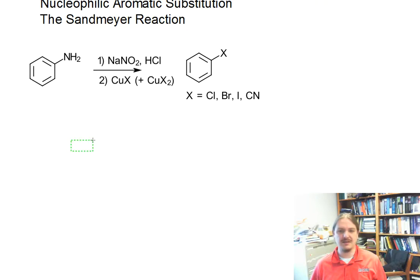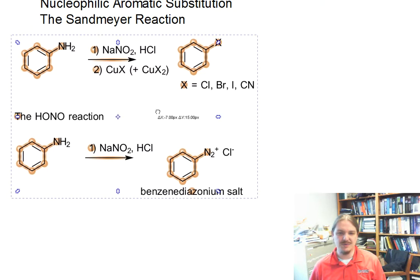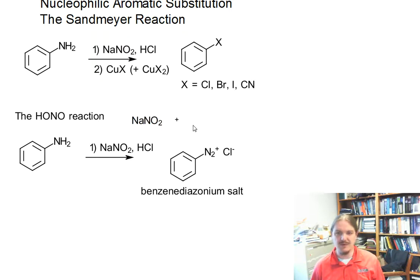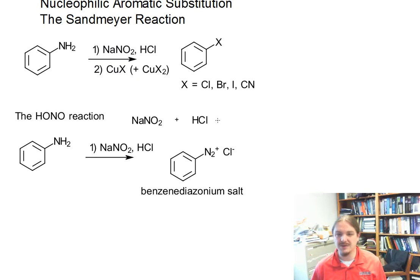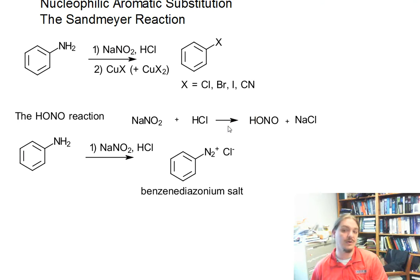It turns out that the Sandmeyer reaction is actually the second half of this process. The first half is something called the HONO reaction. HONO comes from the reagent itself, which is sodium nitrite plus hydrochloric acid. What you get out of this is nitrous acid, which generally has the order of atoms H-O-N-O. Sodium chloride is also produced, and nitrous acid is the active reagent — therefore it's generally called the HONO reaction.